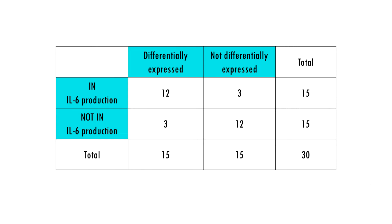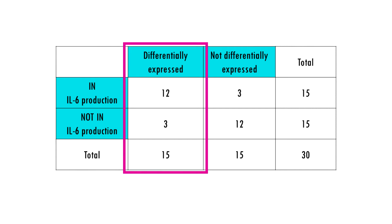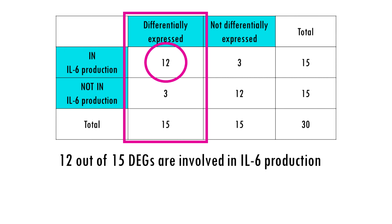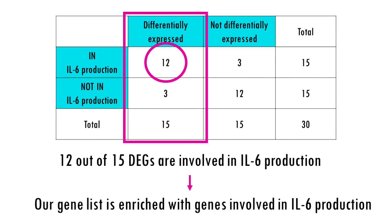We'll simplify things and look at 30 genes. Of those 30 genes, 15 were differentially expressed, and of those 15, 12 were associated with the gene ontology term interleukin-6 production. So 12 out of our 15 differentially expressed genes were involved in interleukin-6 production — we could quite confidently say that our gene list is enriched with genes involved in IL-6 production.